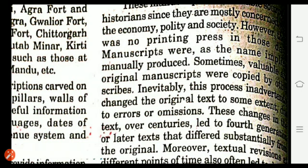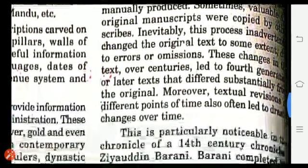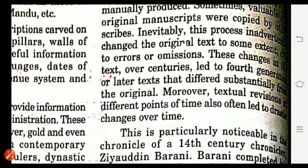This process inevitably changed the original text due to errors or omissions. Because one script was written, another was written by seeing that, then a third — through errors and omissions the original text was changed. These changes in the text over centuries led to fourth-generation or later texts that differed substantially from the original.